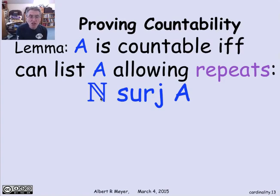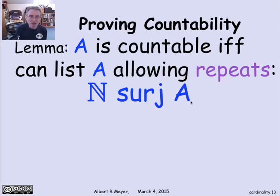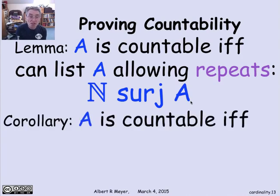Now suppose A is infinite and I have a surjection from the non-negative integers to A — I'm listing A with repeats. To get a bijection, take this infinite sequence with repeats and keep only the first occurrence of each element, filtering duplicates from left to right. That defines a bijection with the non-negative integers. So we have another convenient way to show a set is countable: describe a surjection rather than a bijection. Surjections are often easier to describe, which is why this is a useful lemma.